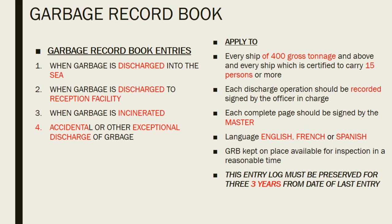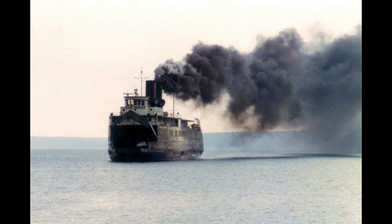Garbage Record Book — this directly comes under the chief officer. The four major entries under the garbage record book are: when garbage is discharged into the sea; when garbage is discharged to a reception facility; when garbage is incinerated; and accidental or exceptional discharge of garbage. The garbage record book applies to ships of 400 GRT and above certified to carry 15 persons. Each operation should be recorded by the officer in charge, and each completed page signed by the master. The working language should be English, French, and Spanish. The garbage record book should be kept available for inspection at all reasonable times and preserved for 3 years from the date of the last entry.